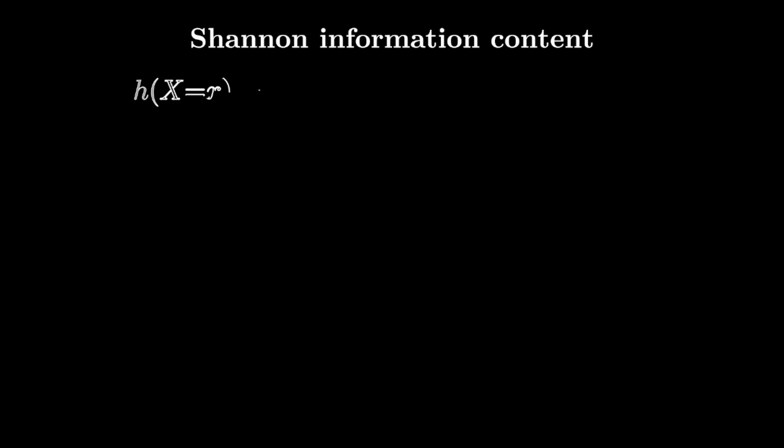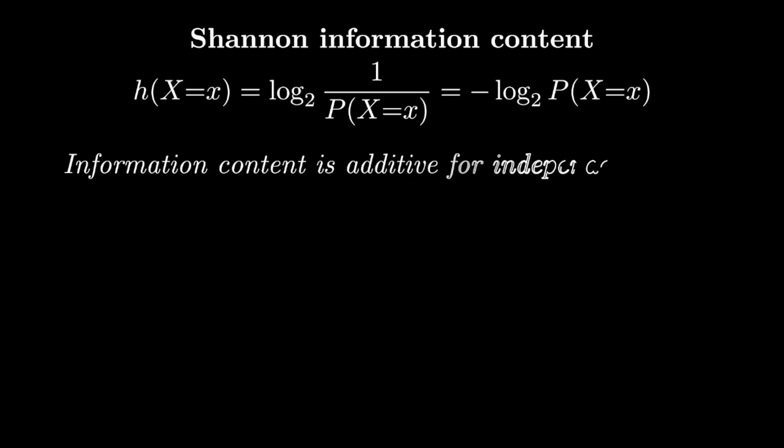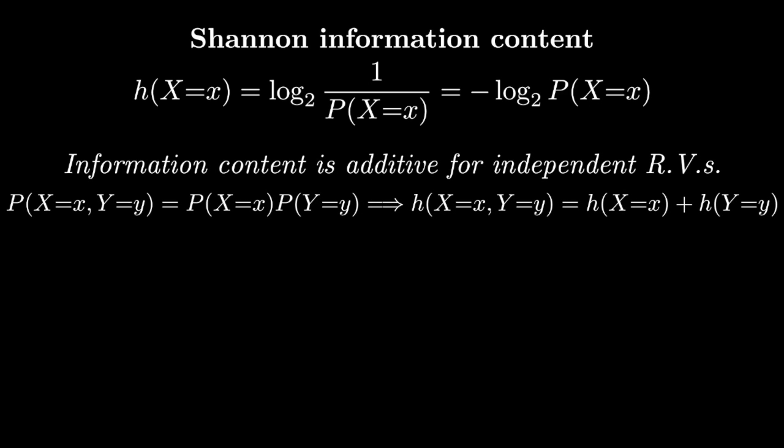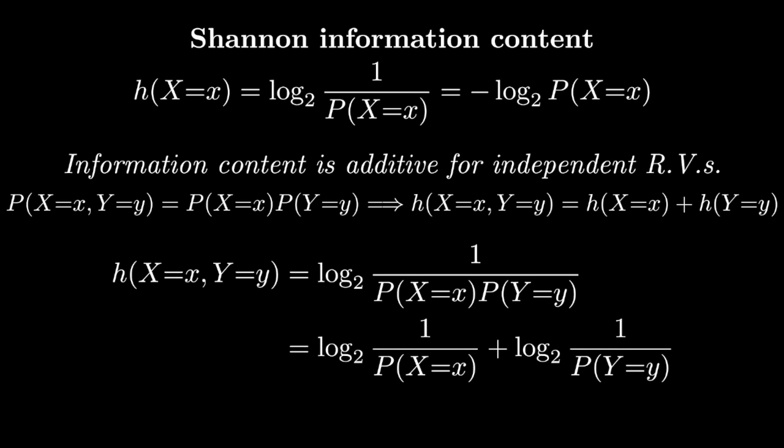And then the last criterion we want is we want Shannon information content to add for independent random variables. That is, if I'm looking at the joint probability of x and y, and that factors into the probability of x multiplied by the probability of y, then I'd like the joint information content to equal the sum of the two marginal information contents. And for Shannon's proposal, this works out because of the magic of logs. We get the log of one over a product, and so then that turns into the sum of two logs. And so we can verify that this satisfies the property that we want.